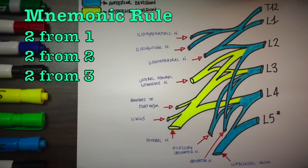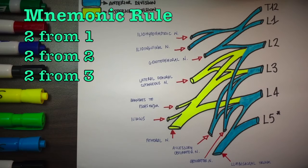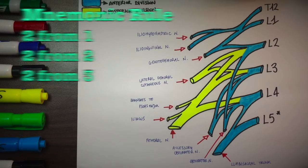Two from one, iliohypogastric and ilioinguinal from L1. Two from two, genitofemoral from L1, L2 and lateral femoral cutaneous from L2, L3. Two from three, femoral and obturator from L2, L3 and L4.